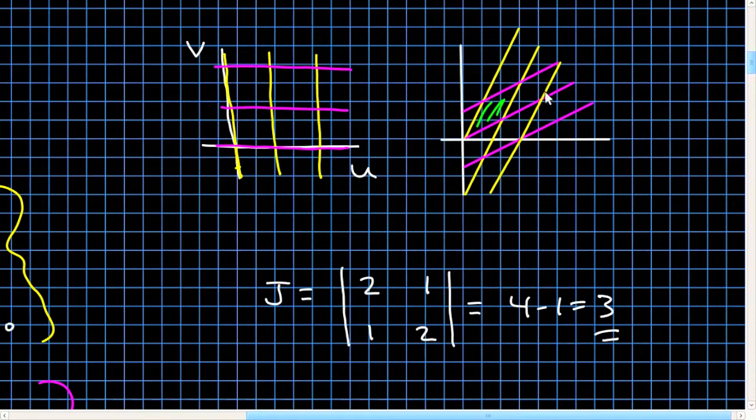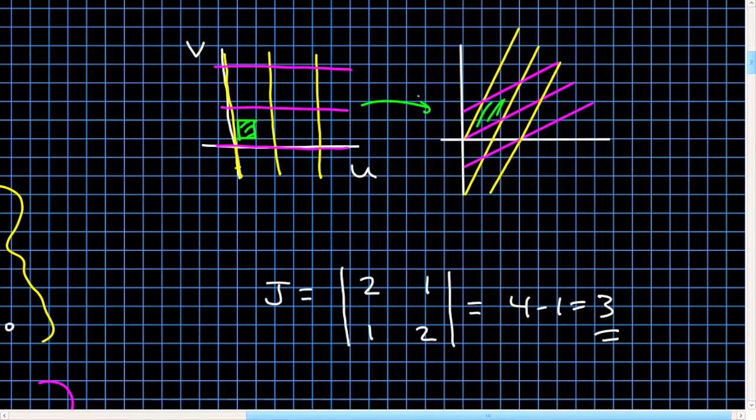But this line, as I already said, corresponds to v equals 0 and u increasing. This corresponds to u equals 0 and v increasing. This corresponds to v equal 1. This corresponds to u equal 1. So the unit square in uv, if I've drawn it correctly, a unit square in uv, I'm going to go ahead and draw it here. Unit square over here in uv gets mapped by T to that region.